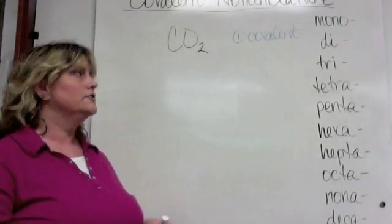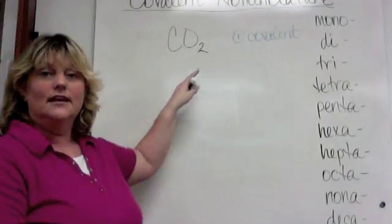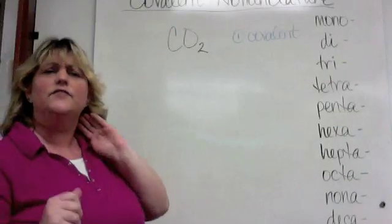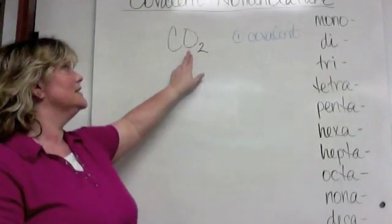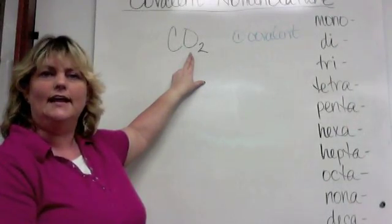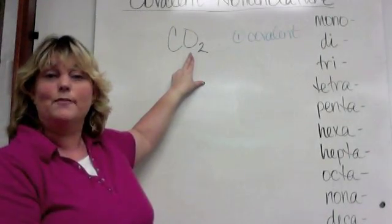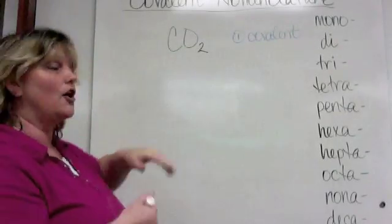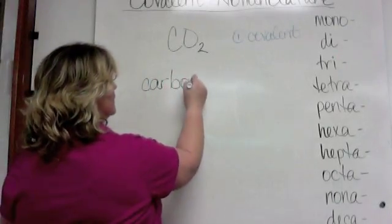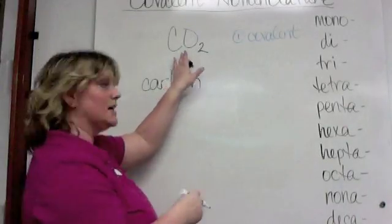Now that I know it's covalent, I just need to name it and say how many. One thing similar to ionic naming: the second element gets the '-ide' ending, as if it were an anion — even though it's not. So I have carbon, and oxygen becomes oxide.